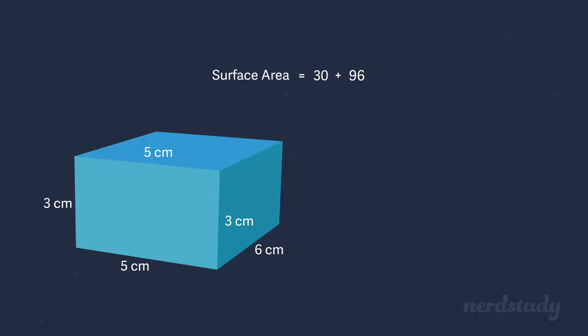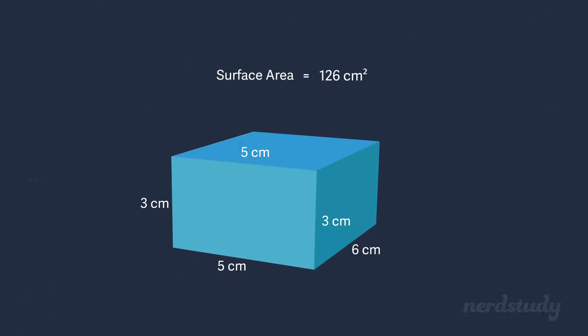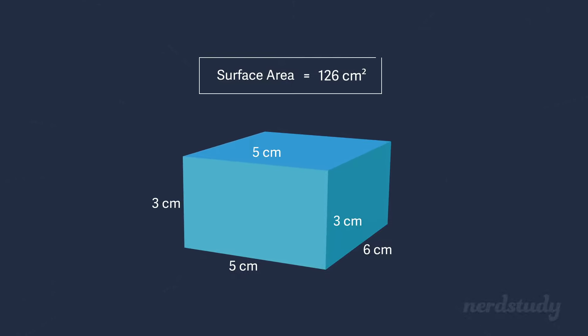Finally, we do 30 plus 96 to get 126 centimeters squared as the total surface area of this rectangular prism. Awesome.